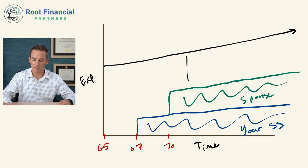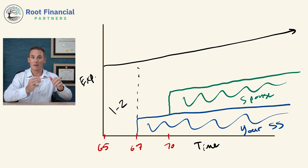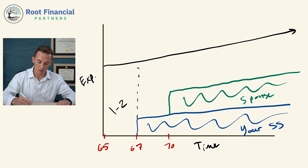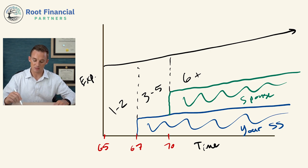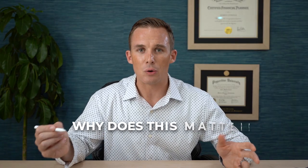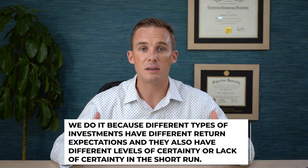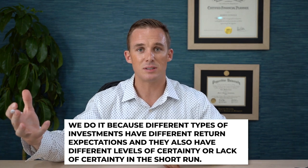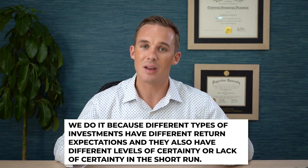What I like to do is think of this as different buckets. Bucket number one covers the first couple of years, where one amount is needed from your portfolio. Then there's bucket two, covering years three through five. And then there's bucket number three, covering years six and beyond in this simple example. Why do we go through the hassle of having different buckets? We do it because different types of investments have different return expectations, and they also have different levels of certainty or lack of certainty in the short run.